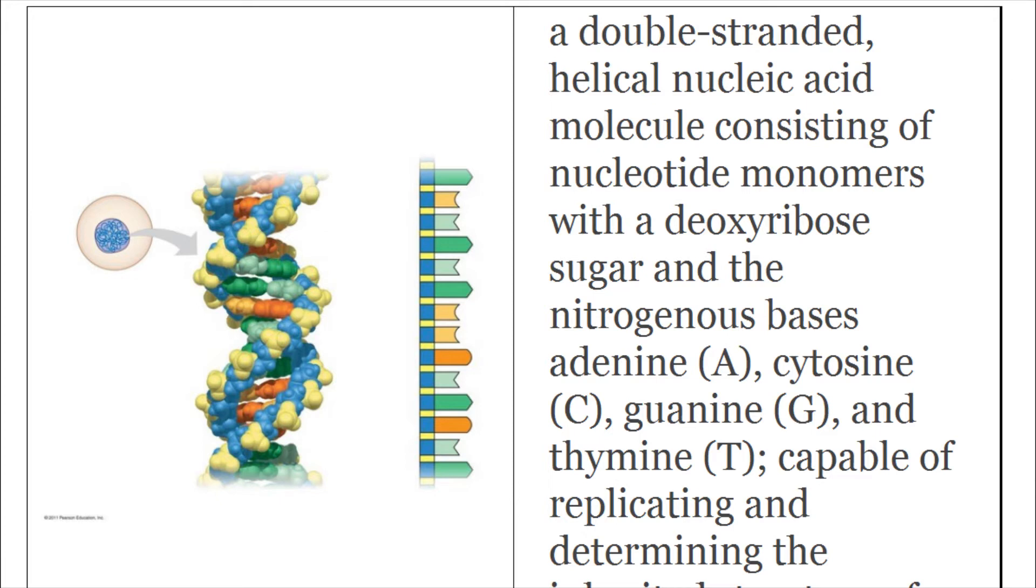Deoxyribonucleic Acid. Cytosine C, Guanine G, and Thymine T. Capable of replicating and determining the inherited structure of a cell's proteins.